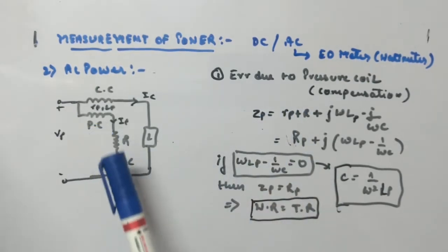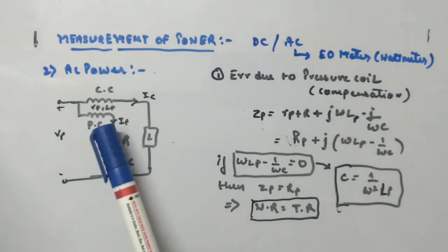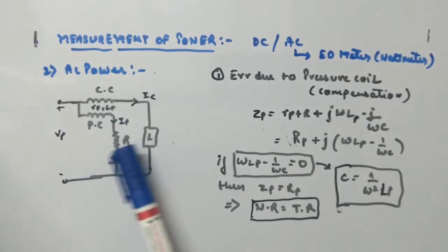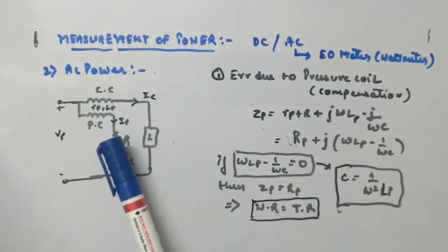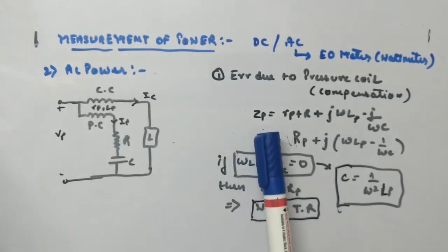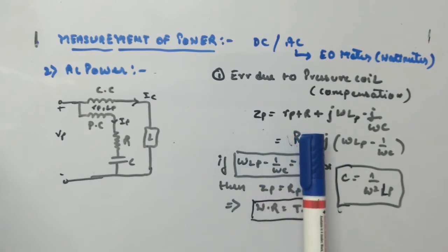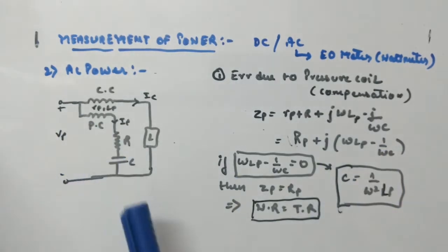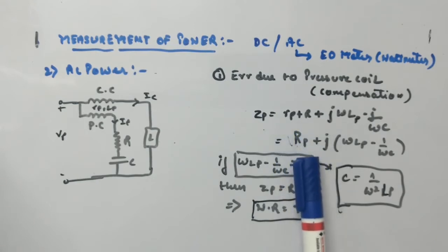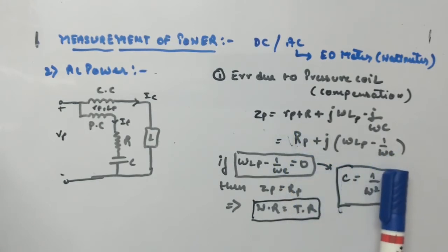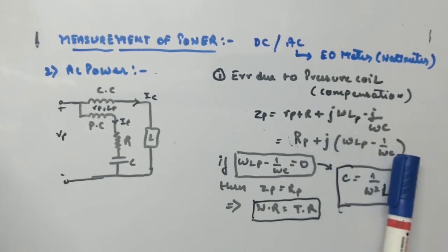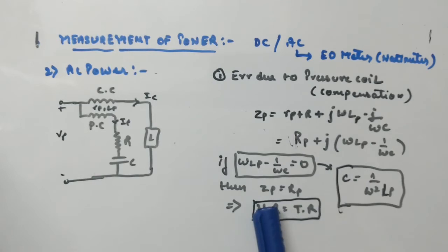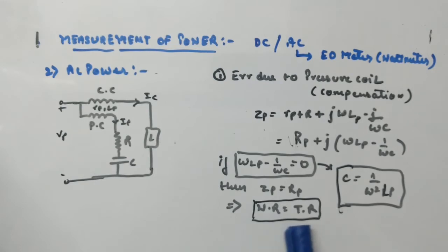Whatever the value of L will be, C will be chosen in such a way that it nullifies the effect of the inductor, and the total impedance of the pressure coil branch becomes purely resistive. So Zp equals rp plus capital R plus jωLp minus j/(ωC). This is the total impedance. If we keep the reactive term zero, the impedance becomes purely resistive, which means the wattmeter reading equals the true reading with no error.